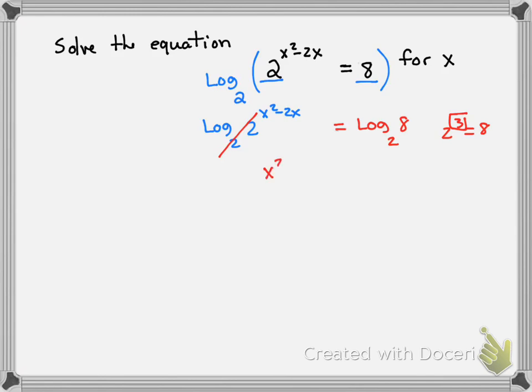So I can say x squared minus 2x equals 3, or x squared minus 2x minus 3 equals 0. I can factor this into x minus 3 times x plus 1 equals 0. So my answers are 3 and negative 1.